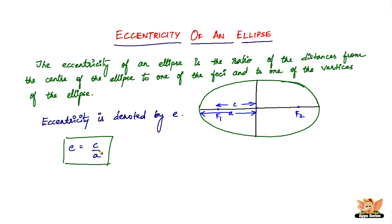This definition says that eccentricity is the ratio of the distance between the center and one of the foci to one of the vertices and the center, which is the ratio of c to a. That's all - c by a is called the eccentricity of an ellipse.